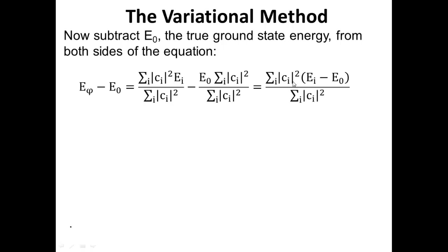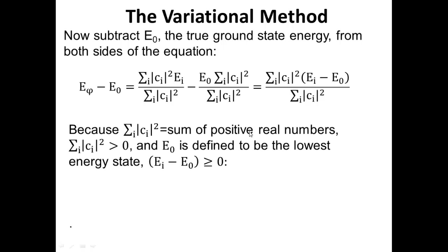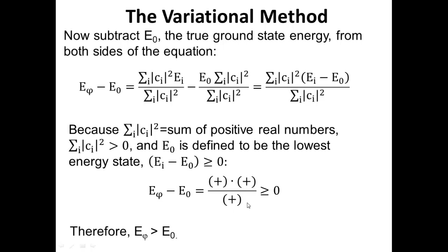The straight lines indicate we're taking the modulus — the real square of the coefficients c_i — and we have the same term in the denominator. The square of c_i is a sum of positive real numbers, so it's positive. E_zero is defined to be the lowest energy state, which means whatever E_i is, it's larger than E_zero, so the difference (E_i minus E_zero) is also a positive number. Therefore E_phi — the energy calculated with our approximate method — is guaranteed to be higher than the true ground state energy E_zero.